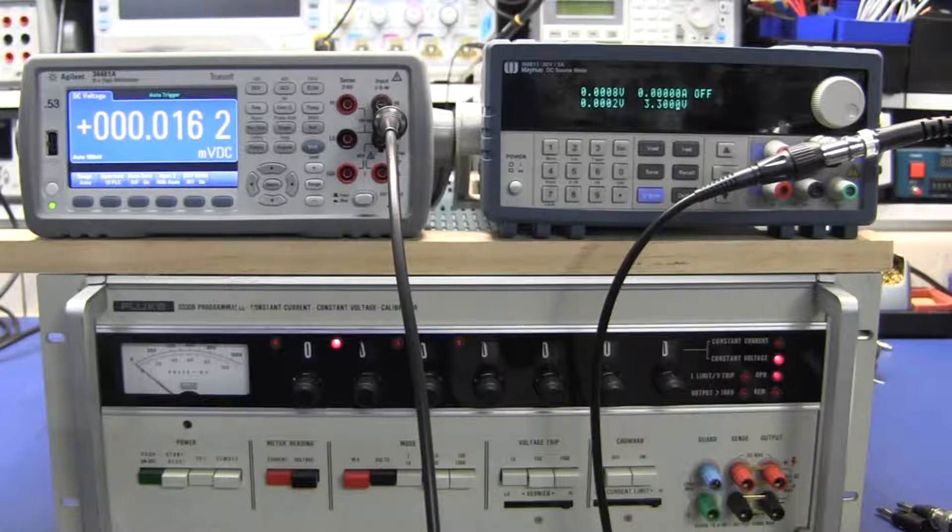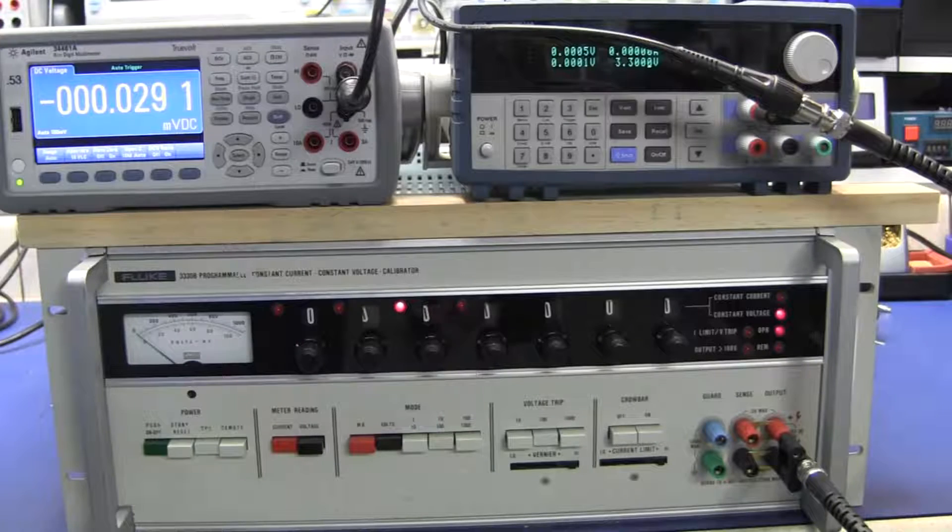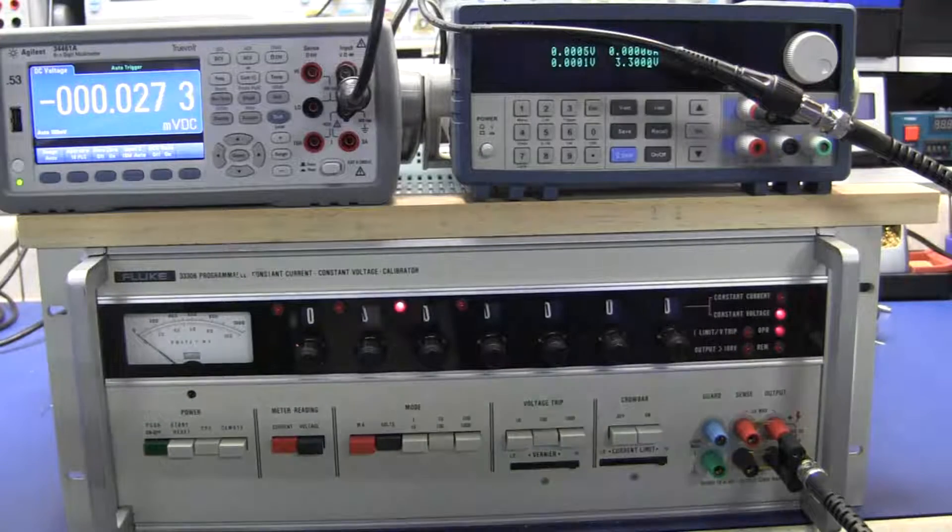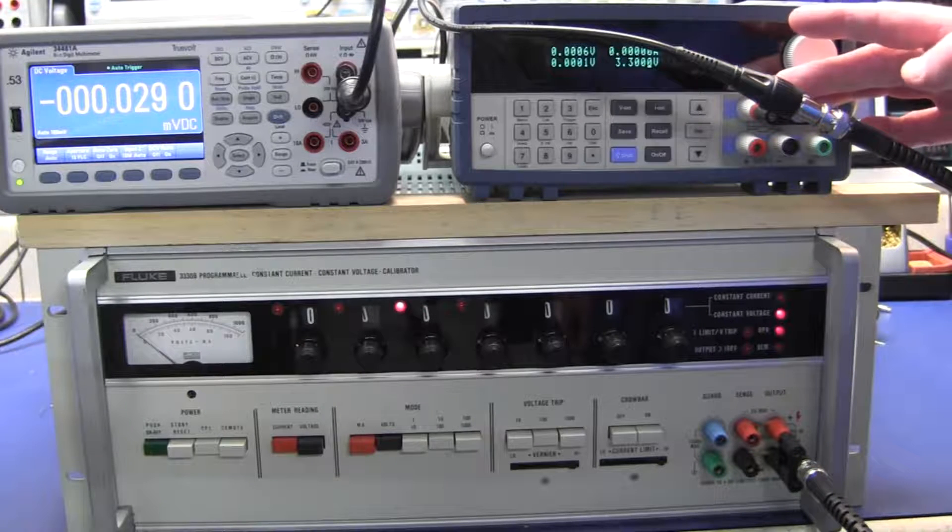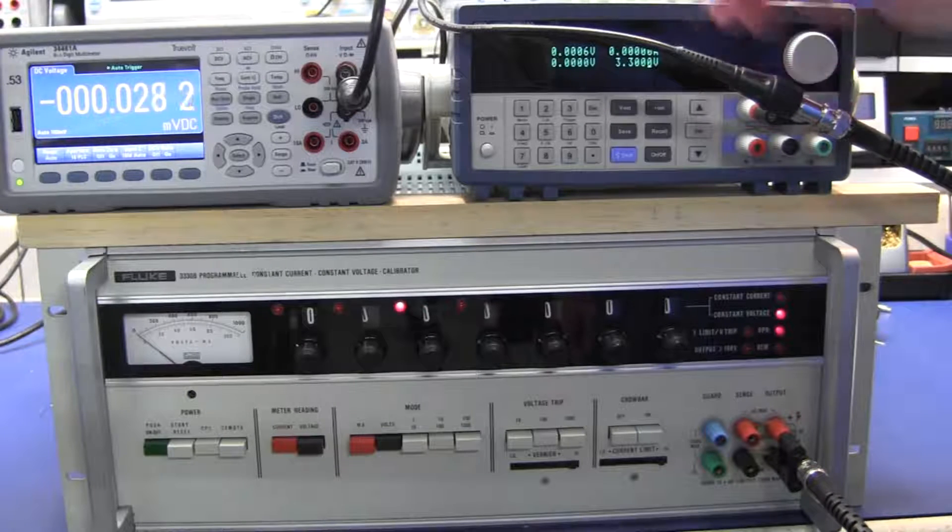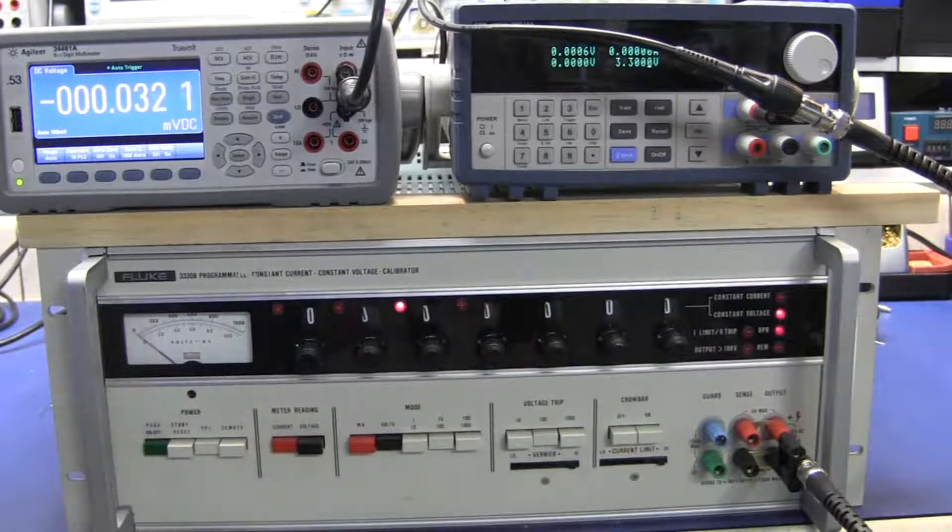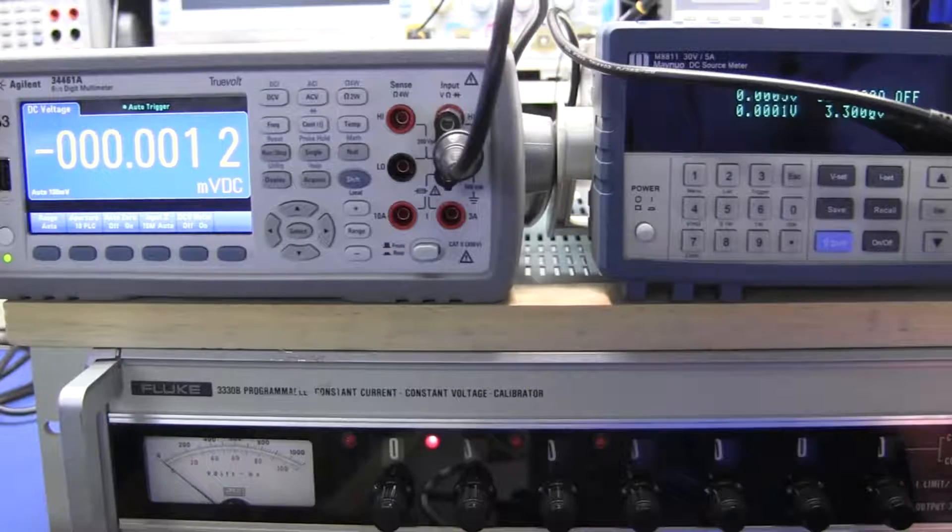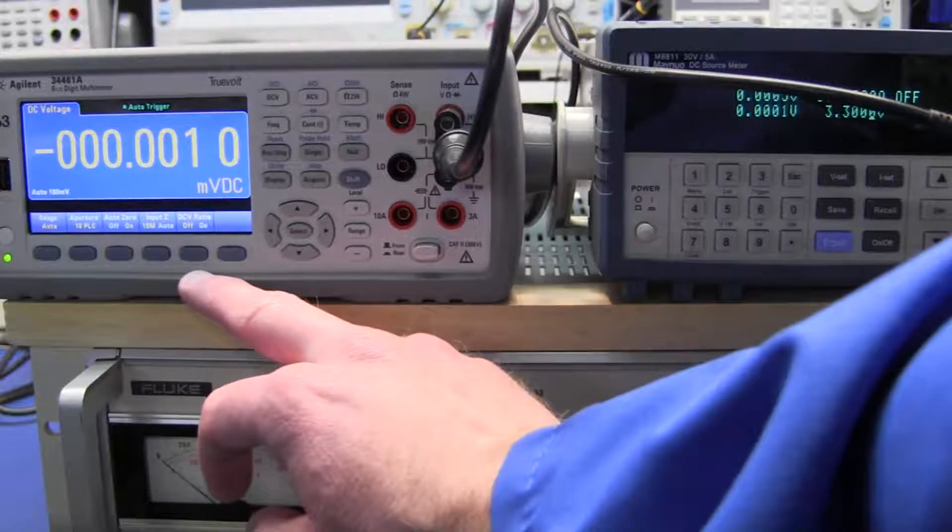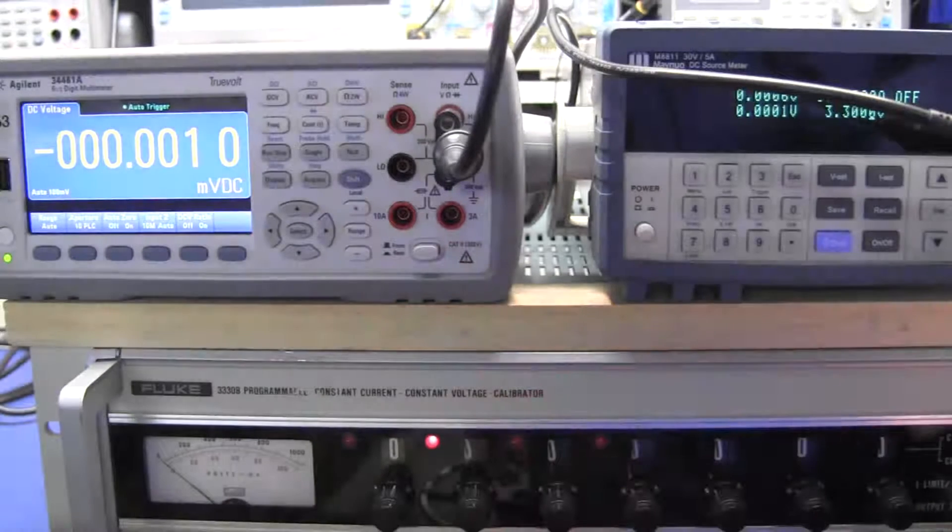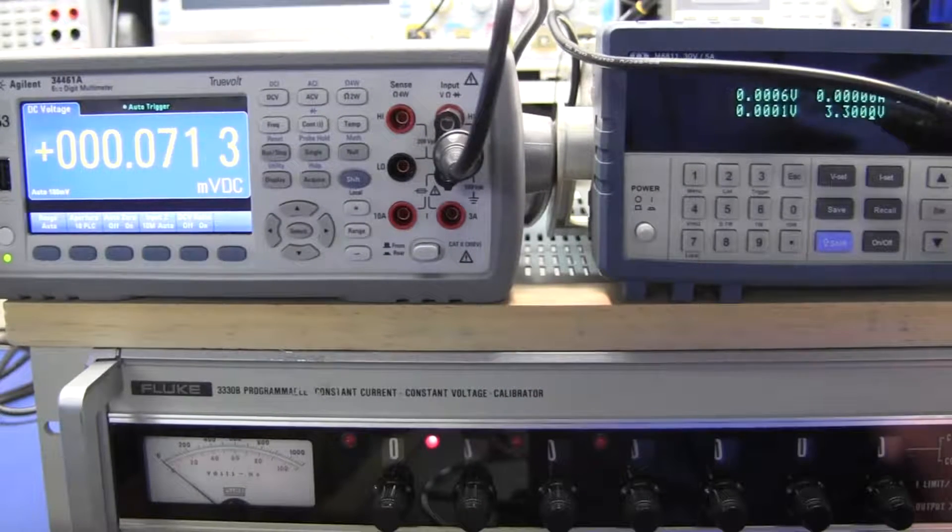Now it's time to test the DVM capabilities of the Mainuo source meter. Here's the test setup. To limit the noise, we're using a Banana Jack to BNC, with as limited lengths of BNC as I had available to each of the devices. That should hold the noise down. With the inputs shorted, the Mainuo is reading about 100 microvolts, and the Agilent is reading between 0 and 1 microvolt.